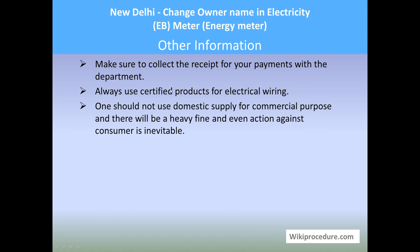Other information: make sure to collect the receipt for your payment with the department. Always use certified products for electrical wiring. One should not use domestic electricity supply for commercial purposes — it is an offense and action against the consumer is inevitable. We hope this video helped you. Don't forget to give us a like and subscribe for more videos. Thank you for visiting wikiprocedure.com to learn how to change owner name in electricity EB meter in New Delhi.